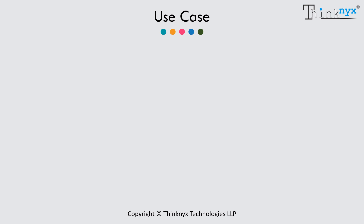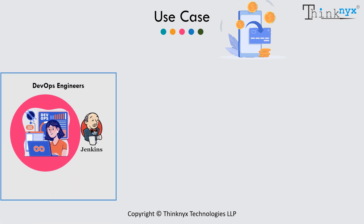Let's understand the roles better through an example. Imagine your company is launching a new feature for its online payment system. Developers write the code, and DevOps engineers set up a Jenkins pipeline to automate testing and deployment. When the code is committed to the repository, Jenkins automatically runs tests, integrates the code, and deploys it to a staging environment. This automation ensures the feature is tested and released quickly, minimizing manual errors and accelerating the deployment cycle.